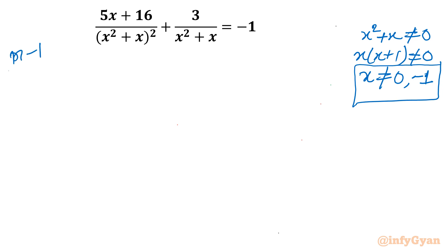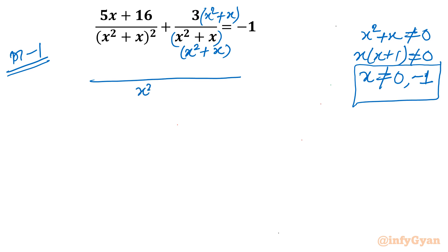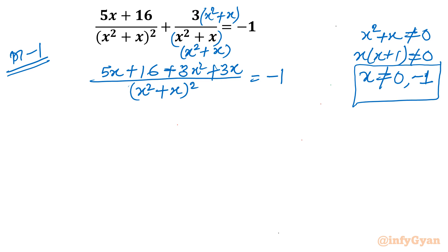Now I will write Method 1. I will make the denominator common. For the second term, I will multiply numerator and denominator by x squared plus x. So the denominator becomes (x² + x) whole square. Checking the numerator: 5x + 16 + 3x² + 3x equals negative 1. Summing up the numerator gives 3x² + 8x + 16.